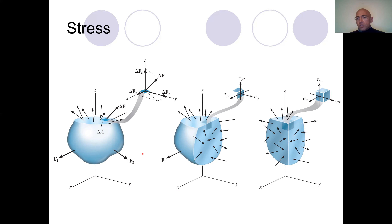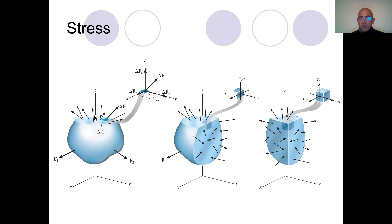Using force directly may lead to misconceptions, so we need another measure. We generally use differentiation and infinitely small pieces to analyze engineering systems, because we need a mathematical model to solve our problem. When we focus on a point on a cut surface, there exists a resultant force that may have an arbitrary direction.